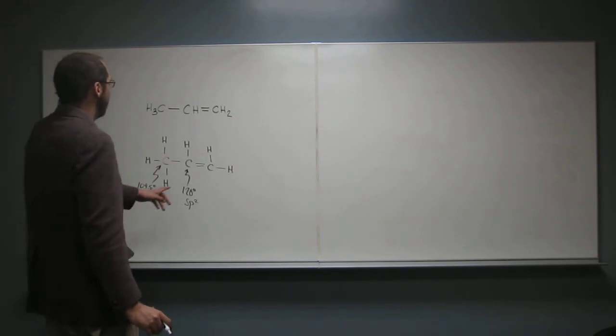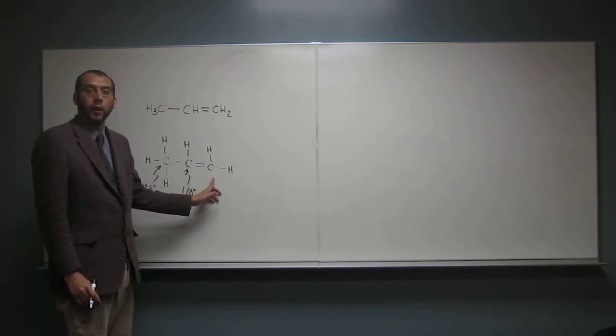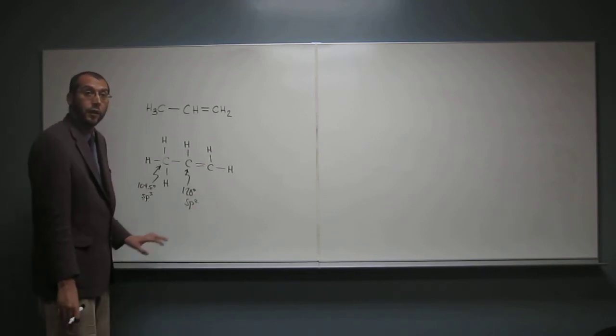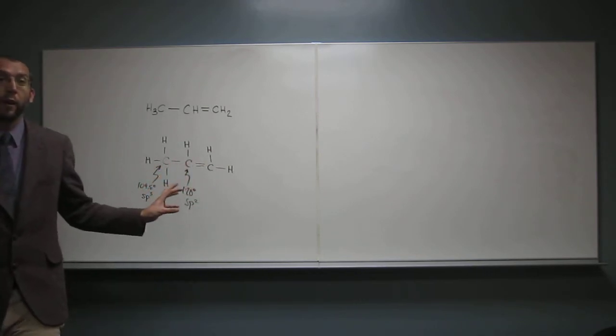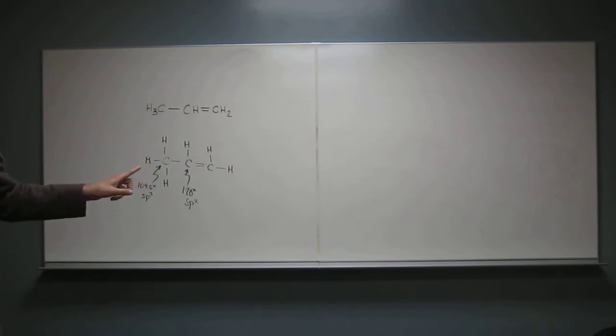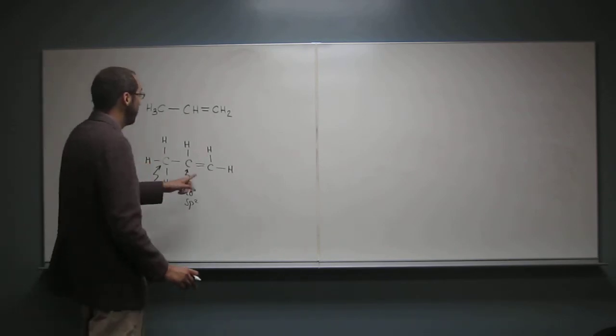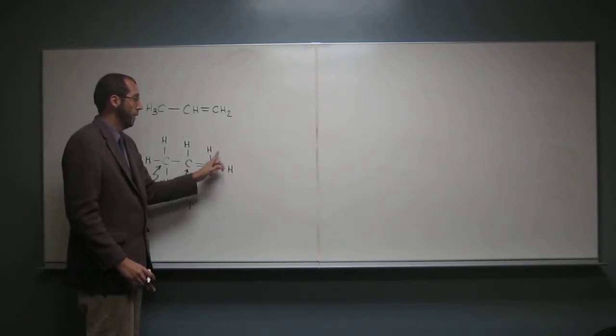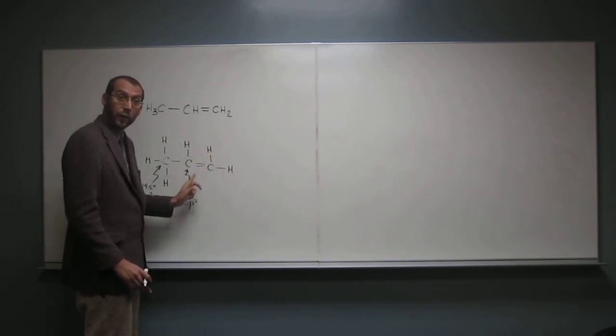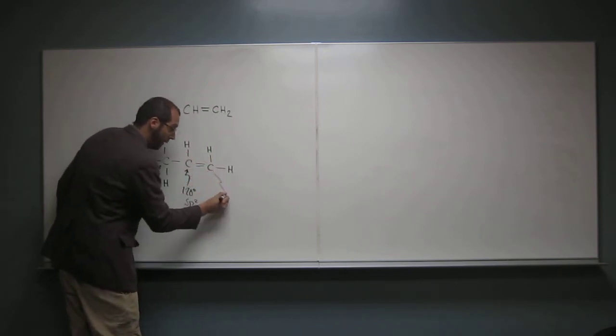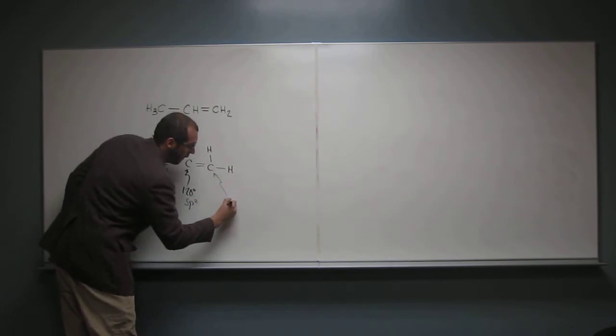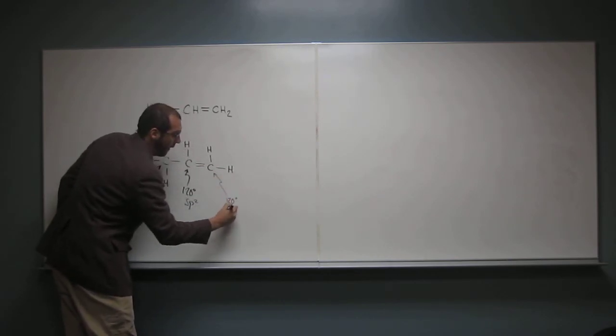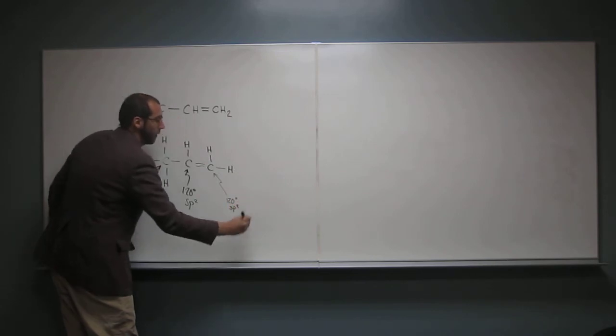So now let's look at this third carbon atom here. And let's do it together. So what do we have to do first? Count how many atoms it's bonded to. Very good, right? So how many? So let's go. One, two, and three. Three, OK. So what's the bond angle? 120. 120, very good. And the hybridization? SP2. SP2, OK?